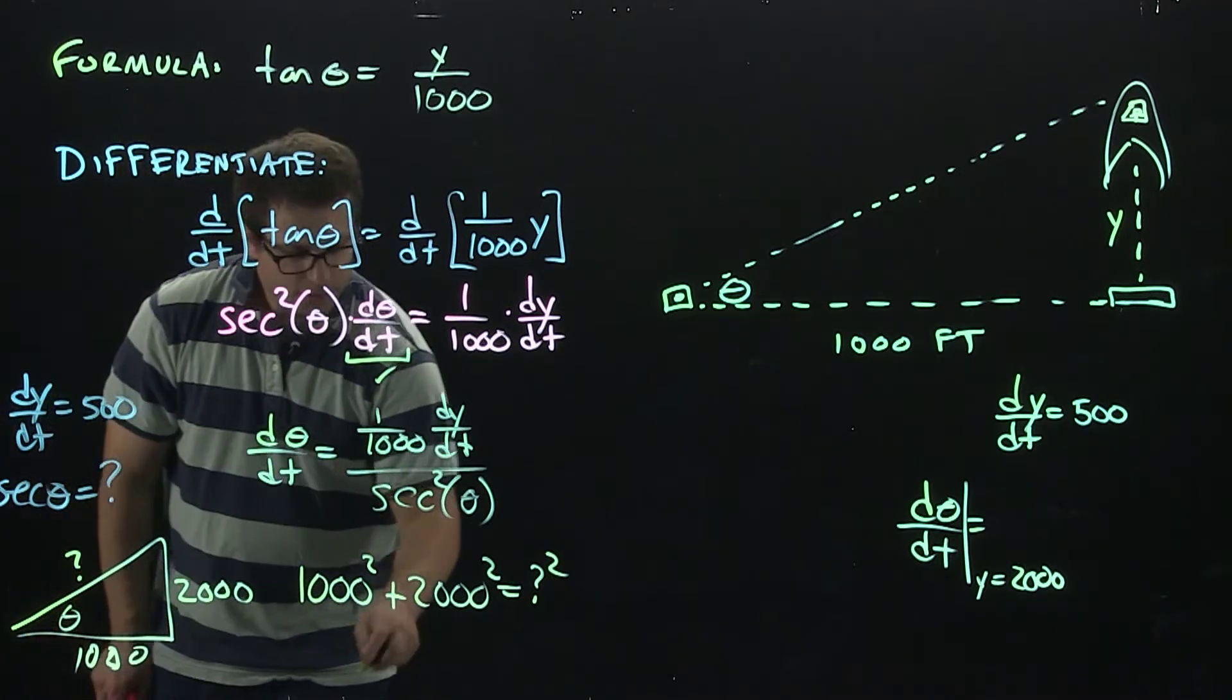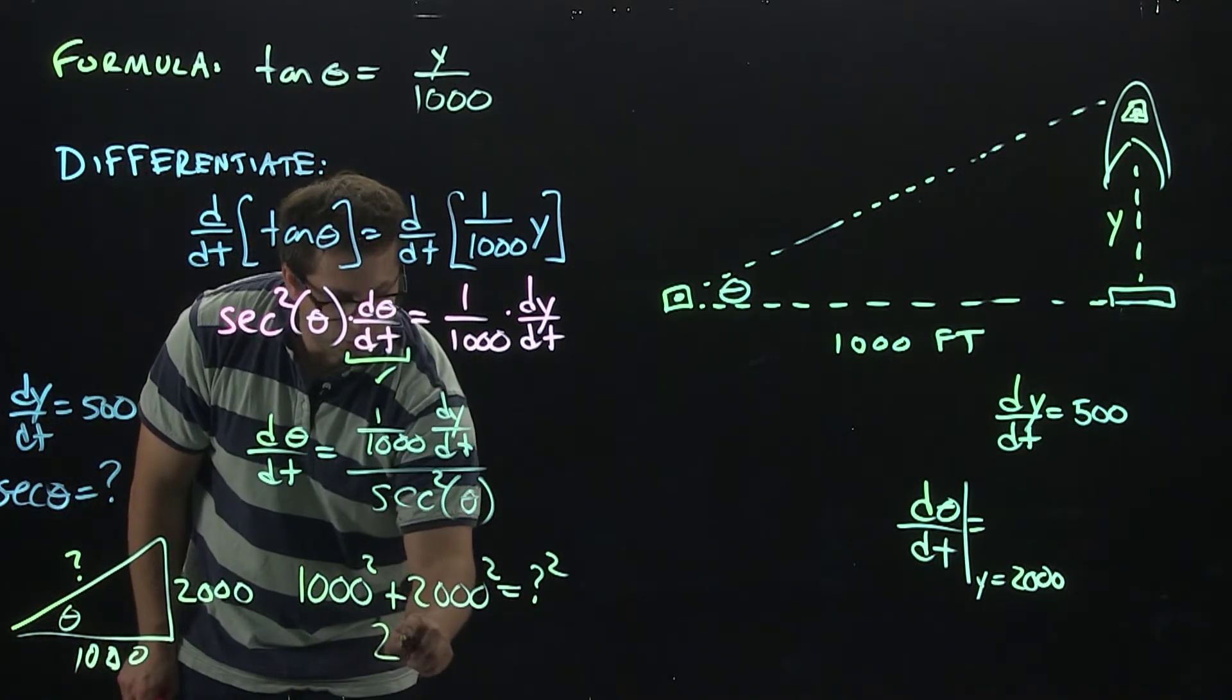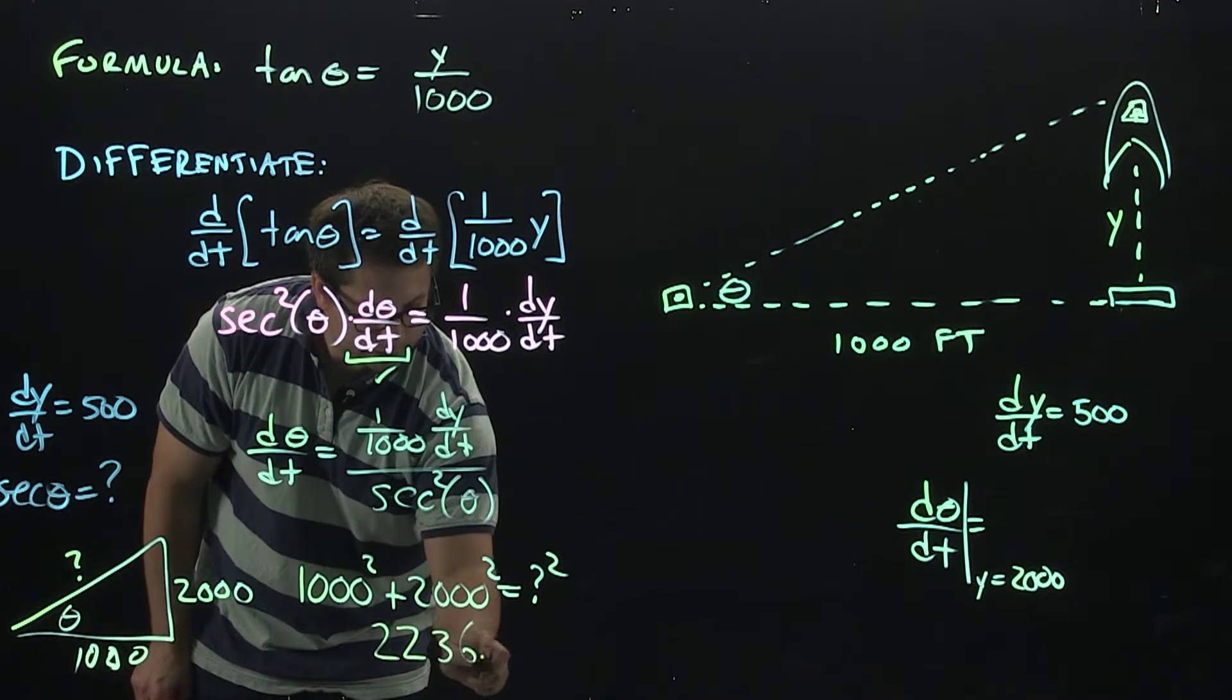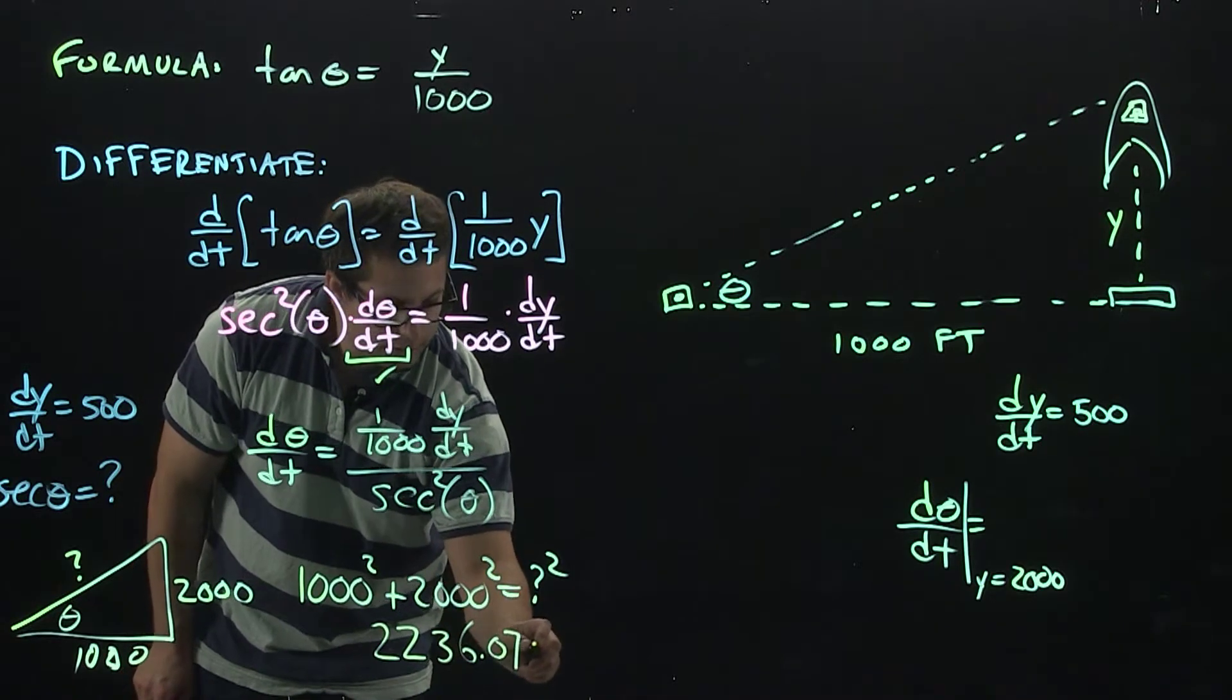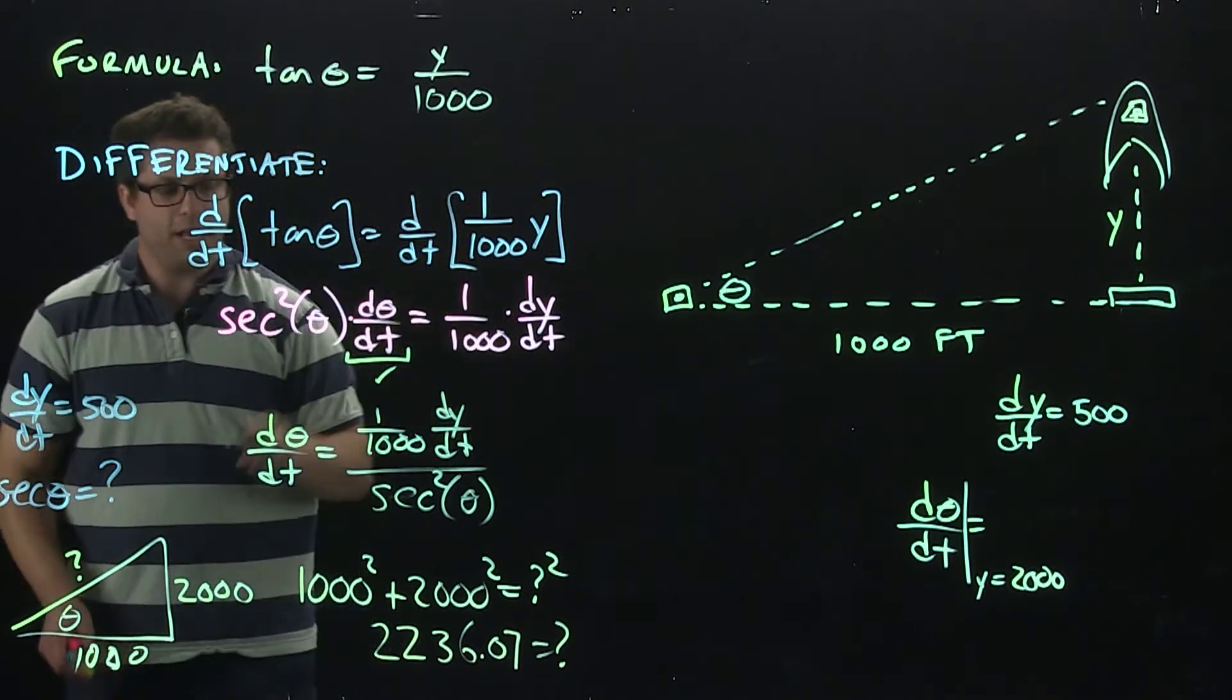Now if you solve for that, you are going to get 2,236.07 for the hypotenuse.